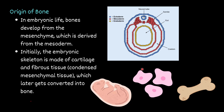Today we will discuss the origin of bone and the process of osteogenesis — that is, how bones are formed. The embryo is derived from three germ layers: the outermost ectoderm, the middle mesoderm, and the innermost endoderm. From the middle layer, the mesoderm, mesenchymal tissue is derived, which contains primitive mesenchymal cells. These cells are involved in bone formation.